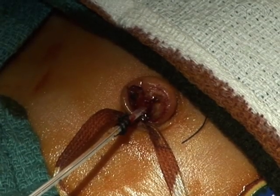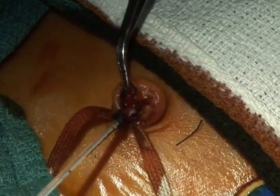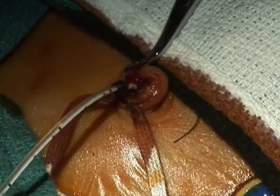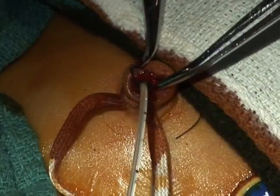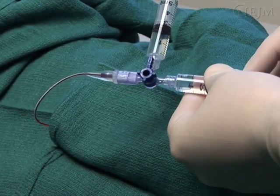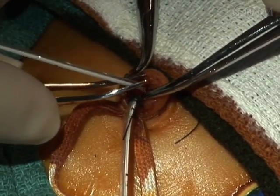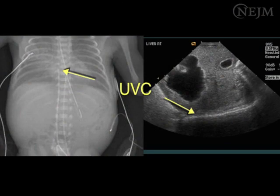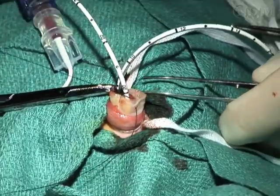To insert an umbilical vein catheter, with your non-dominant hand grasp the cord with the toothed forceps. With your dominant hand, using the mosquito forceps, remove any blood clots from the entrance of the vein. Introduce the pre-flushed venous catheter, attached to the stopcock and syringe, into the lumen of the vein and insert 3 centimeters. Gently pull back on the syringe to confirm blood return and proper placement. If blood returns, continue inserting the catheter to the predetermined depth. Obtain radiographic or ultrasonographic confirmation of catheter position; the ideal position is in the inferior vena cava near the right atrium. Secure the catheter as you did for the arterial catheter.